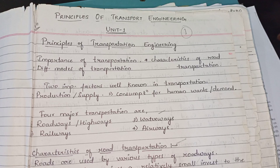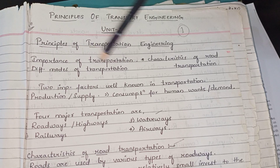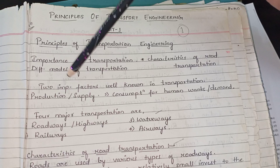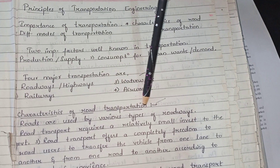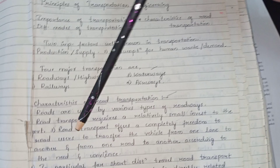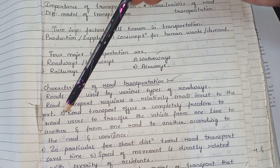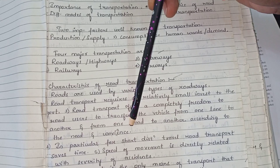Now we will see the characteristics of road transportation. Roads are used by various types of road users. Road transport requires a relatively small investment from the government. Road transport offers complete freedom to road users to transfer the vehicle from one lane to another and from one road to another according to need and convenience.